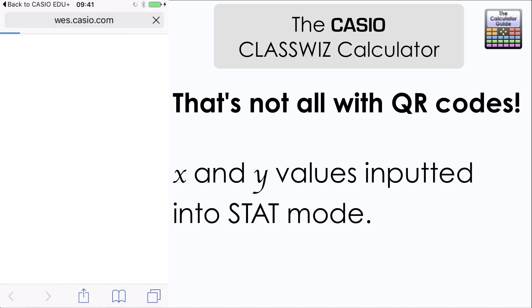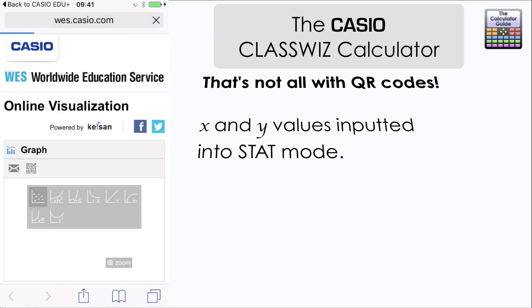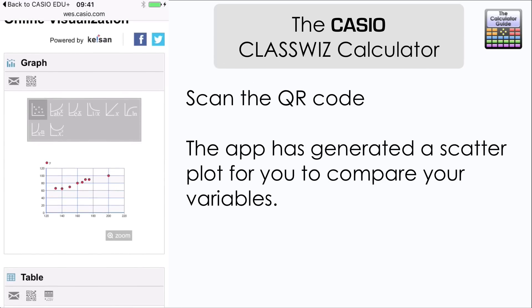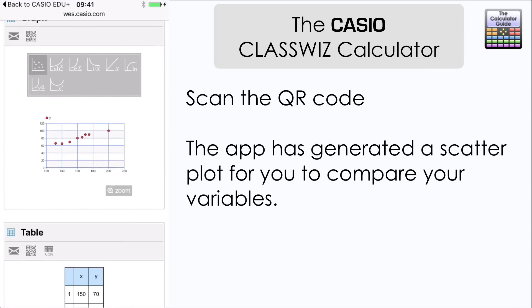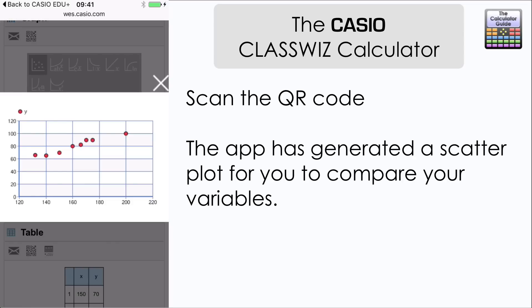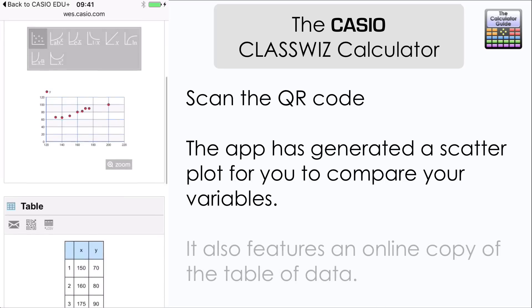And here we have it all loaded up. And what it's produced for us is a scatter diagram or a scatter plot. Related to the X and Y values that I inputted. And there's a zoom function here. So we can make it a little bit larger. Make it a little bit clearer. So we can see the data that I inputted earlier in a graphical form. And also it produces an online copy of the table of data as well for us there.